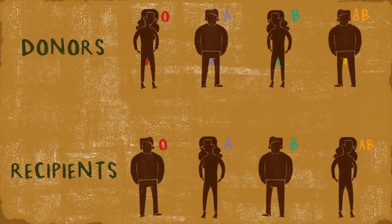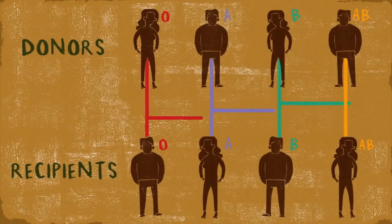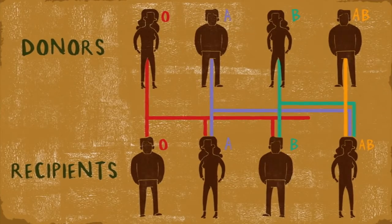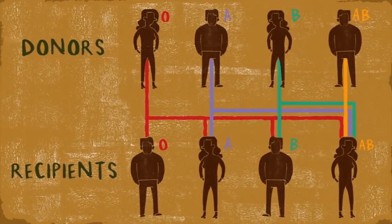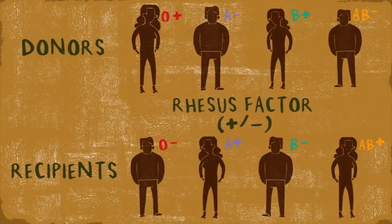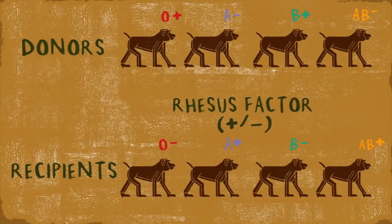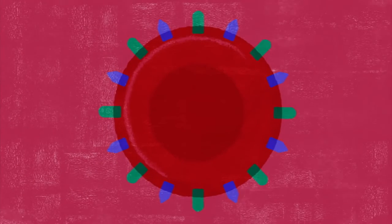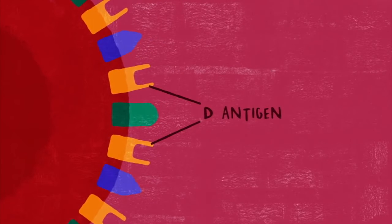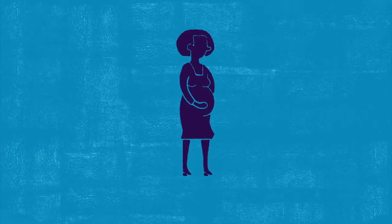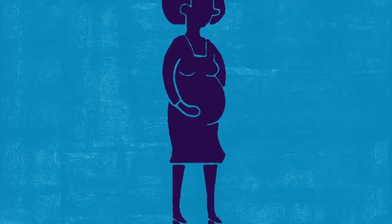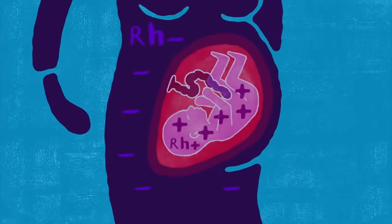Unfortunately, matching donors and recipients is a bit more complicated due to additional antigen systems, particularly the Rh factor, named after the rhesus monkeys in which it was first isolated. Rh plus or Rh minus refers to the presence or absence of the D antigen of the Rh blood group system, and in addition to impeding some blood transfusions, it can cause severe complications in pregnancy.